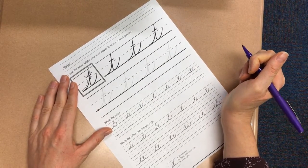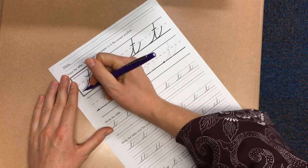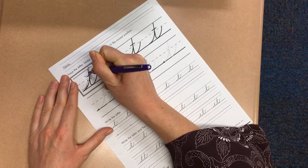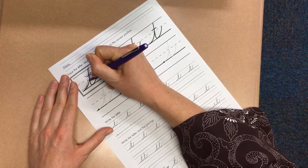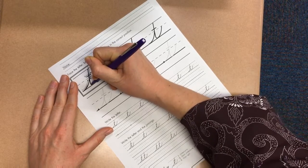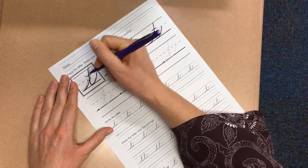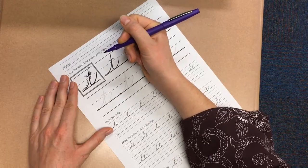Our T starts out the same way as many of our other letters. We're going to start with an undercurve, but instead of stopping at the midline, we're going to go all the way to the ceiling. We're going to slant all the way back down to the floor, and then we're going to do another undercurve to the midline. We lift our hand, and then we cross our T.